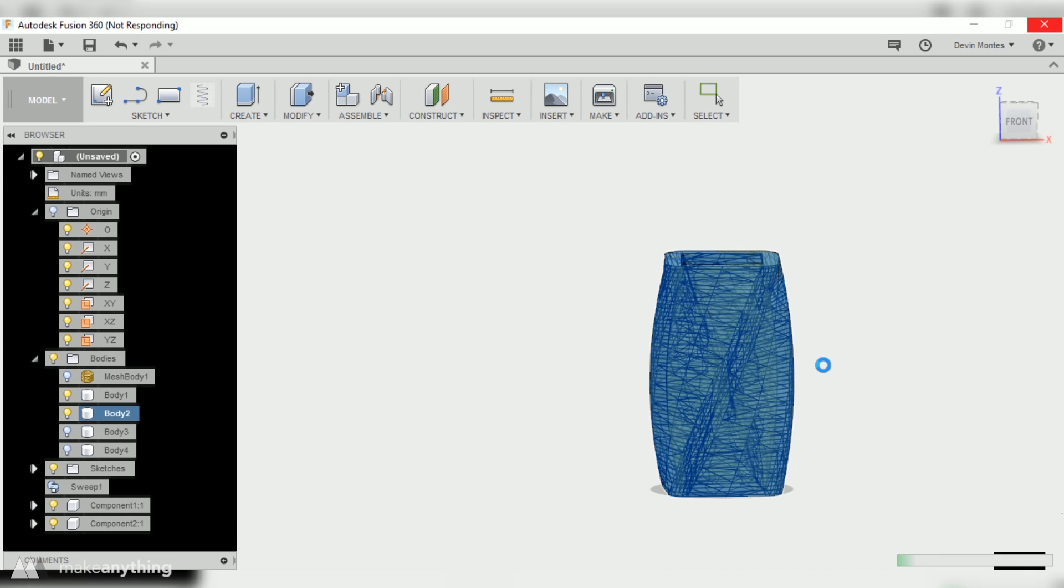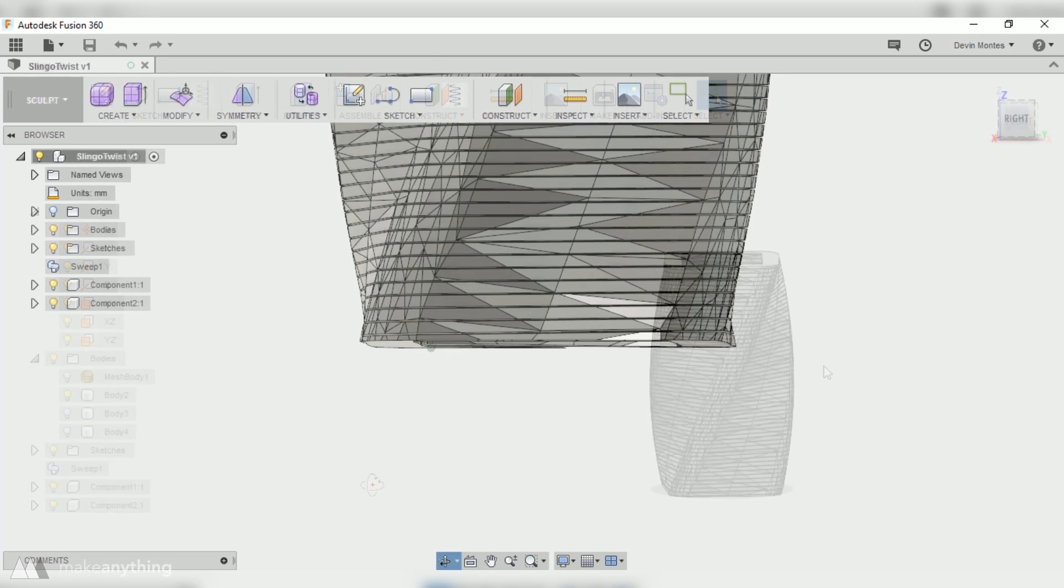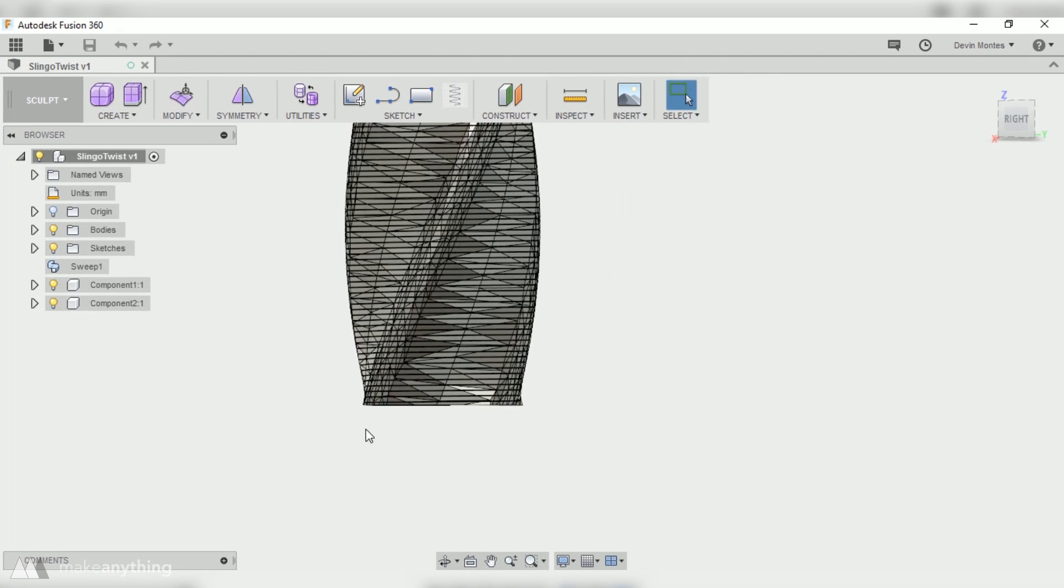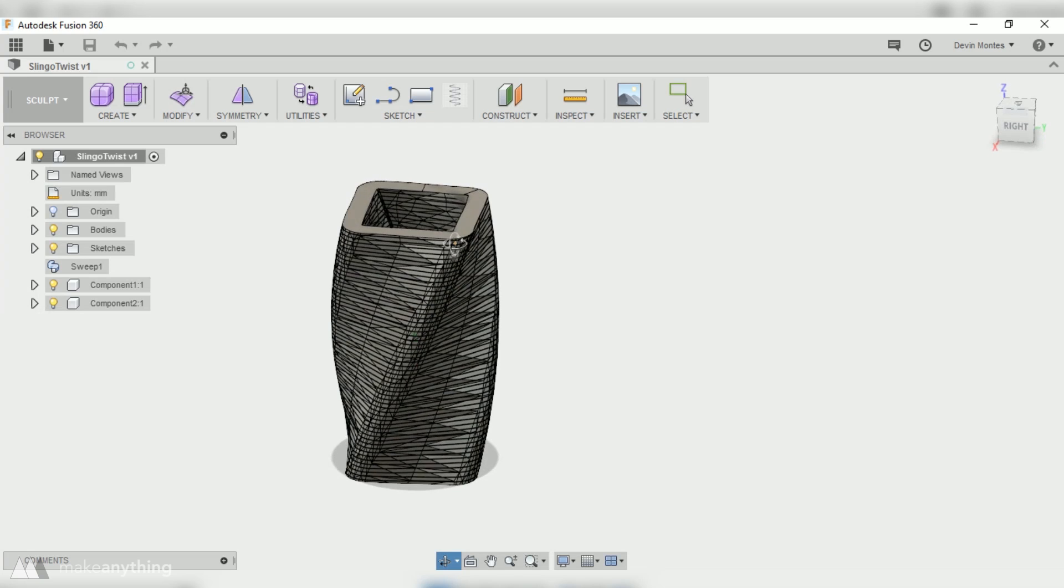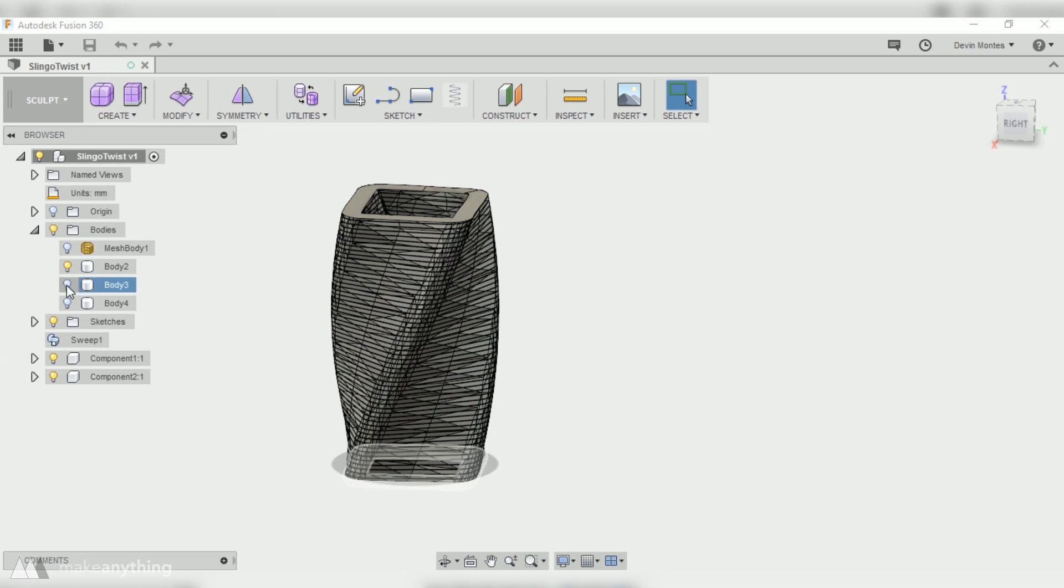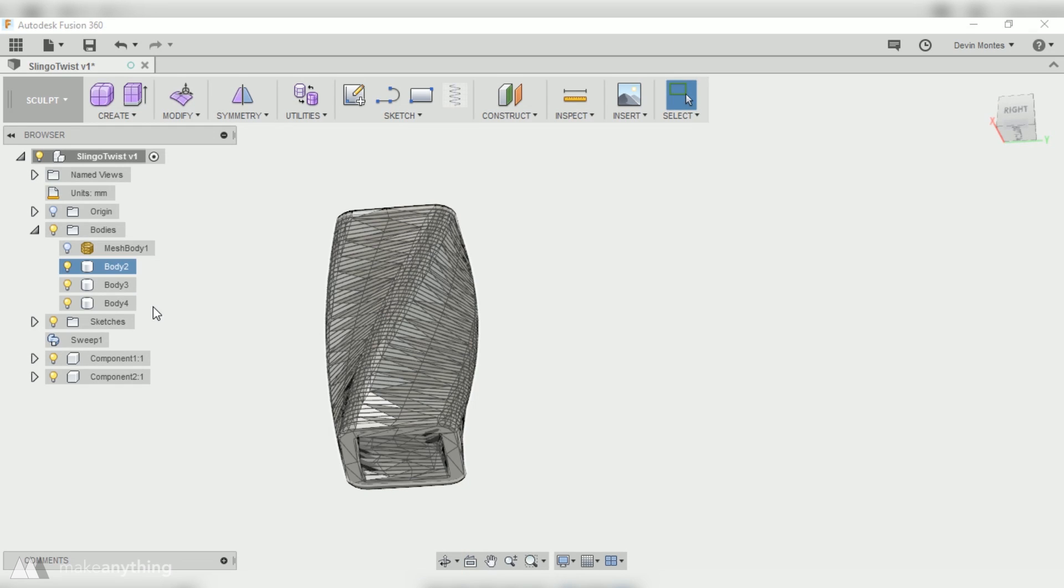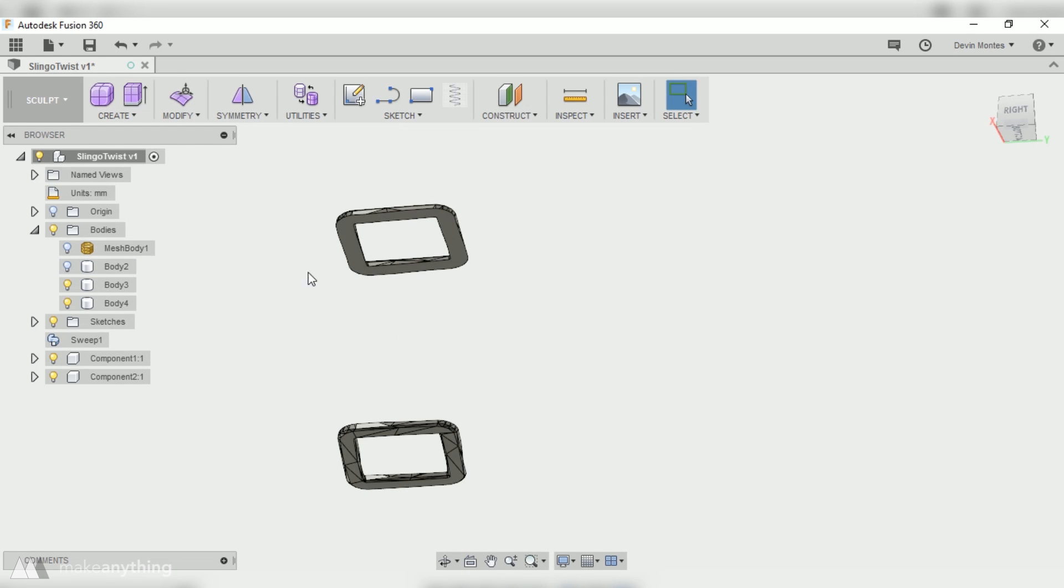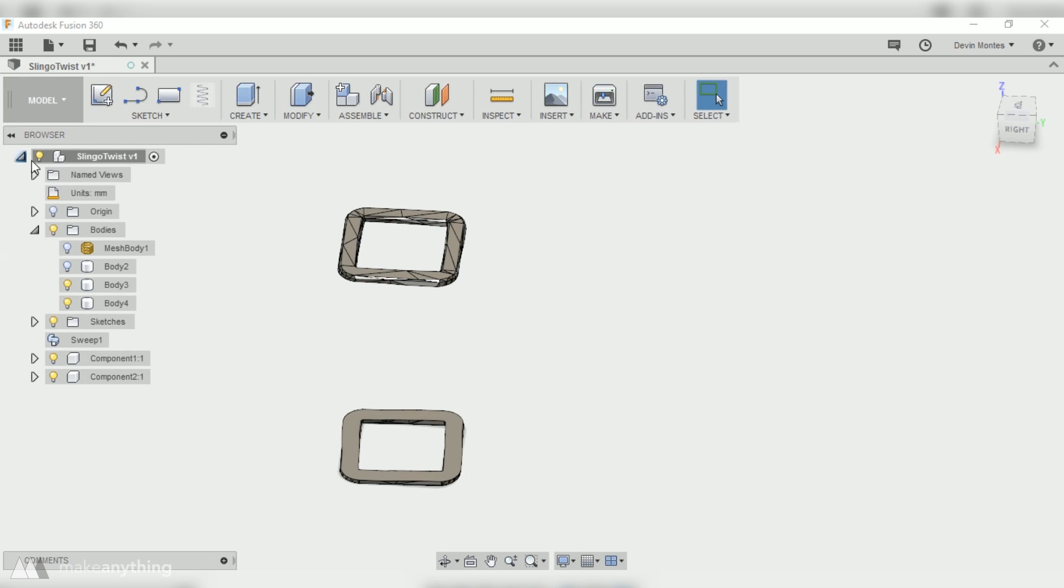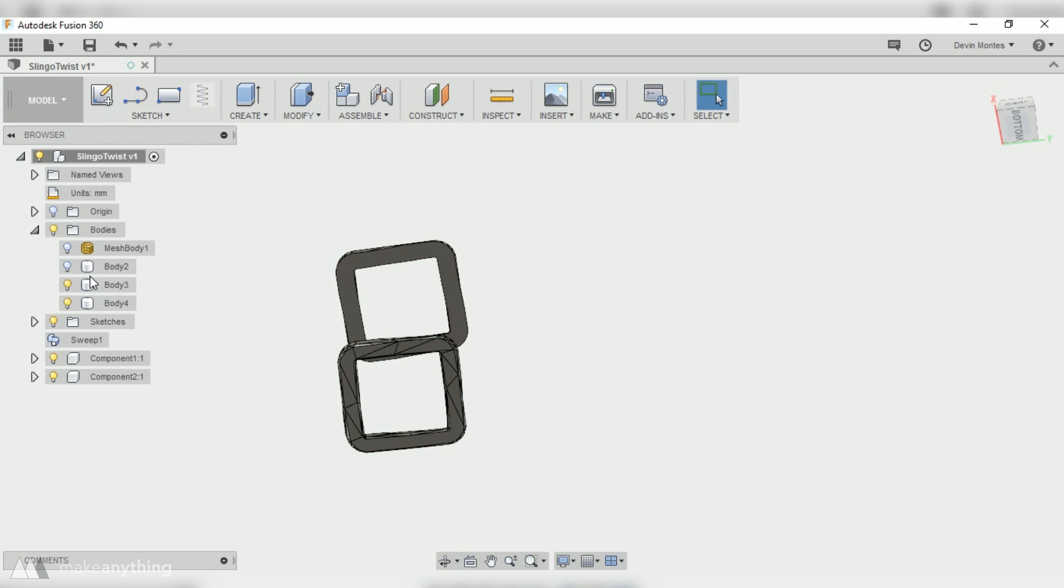It's a pretty complex form and depending on your computer it might crash Fusion, just make sure that you're saving pretty often. Okay, at this point we just want to bring back those top and bottom sections and then combine it all into a single part. But as you can see here, as a result of that mesh reduction process, the top and bottom surfaces of these end caps aren't completely flat. They've still got all these little triangular facets.